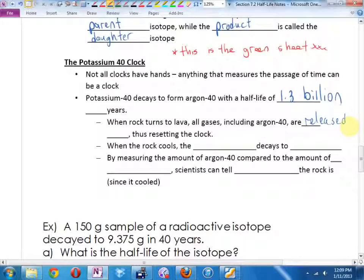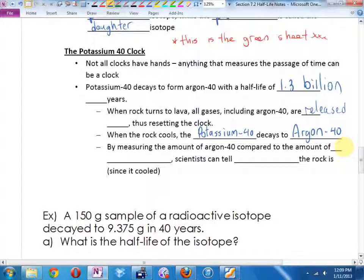When the rock cools, the potassium-40 decays into argon-40. And if we measure the amount of argon-40 compared to the amount of potassium-40, we can tell how old the rock is since it cooled. It doesn't necessarily tell us how old the rock is overall, but it tells us how long it's been since it melted. That's pretty good.